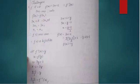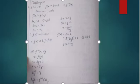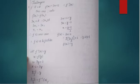Now for f inverse of x: let x = f(y), so x = 3y + 2. Transposing 2 to the other side gives x - 2, then dividing by 3. Therefore f inverse(x) = (x - 2)/3.